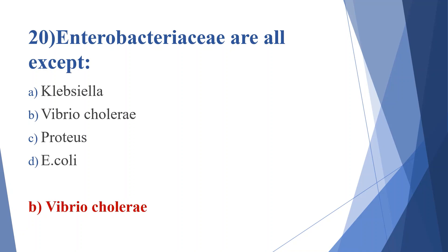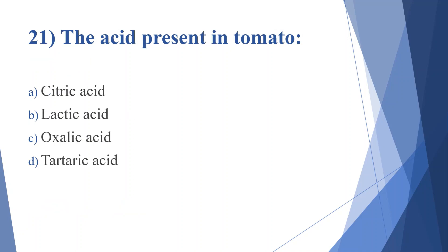Twenty-first question: the acid present in tomato. Option A: citric acid. Option B: lactic acid. Option C: oxalic acid. Option D: tartaric acid. Answer is option C, oxalic acid.